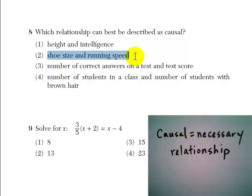Shoe size and running speed aren't necessarily causal either, right? You can run very fast if you have big feet or small feet.